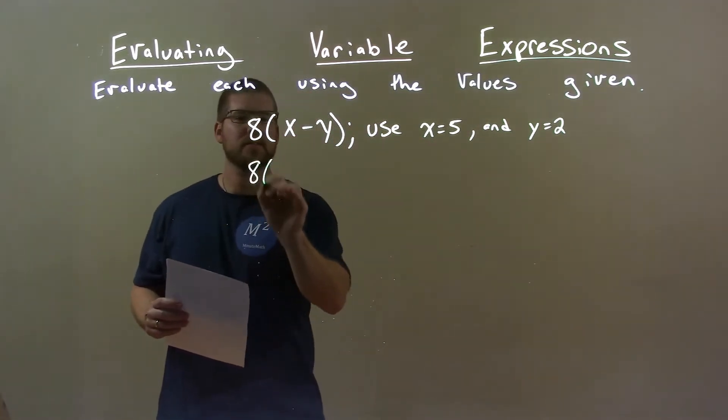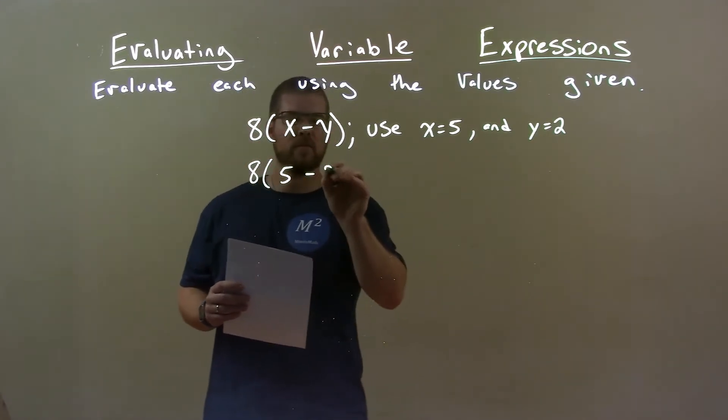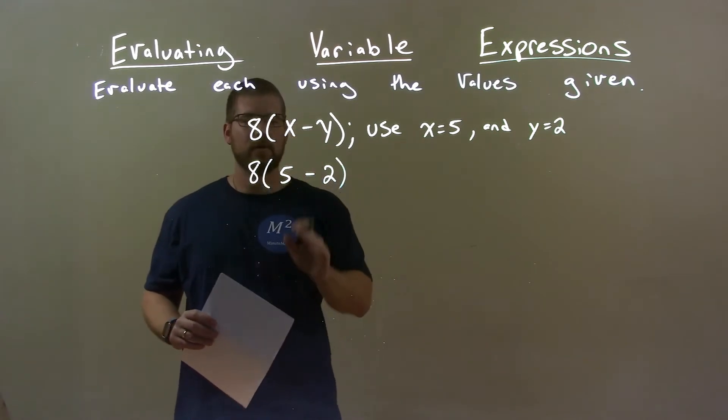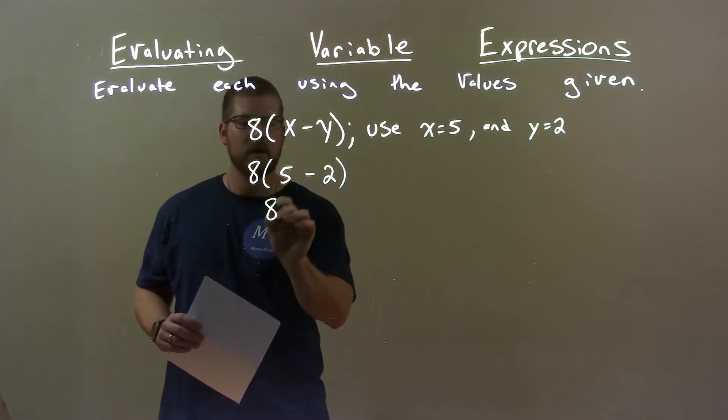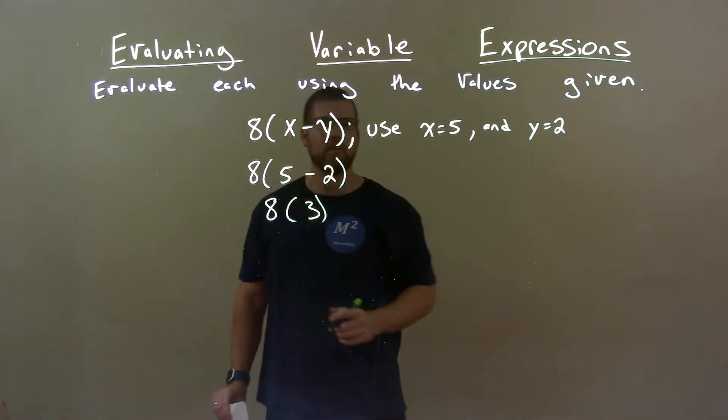So, 8 times x is 5 minus y we said was 2 and now it's time to simplify. Parentheses come first. 5 minus 2 is 3. So we have 8 and 3 right there. 8 times 3, 3 being what's in the parentheses.